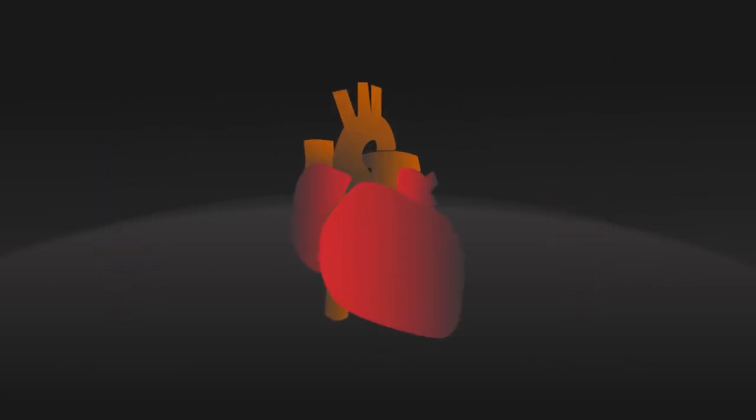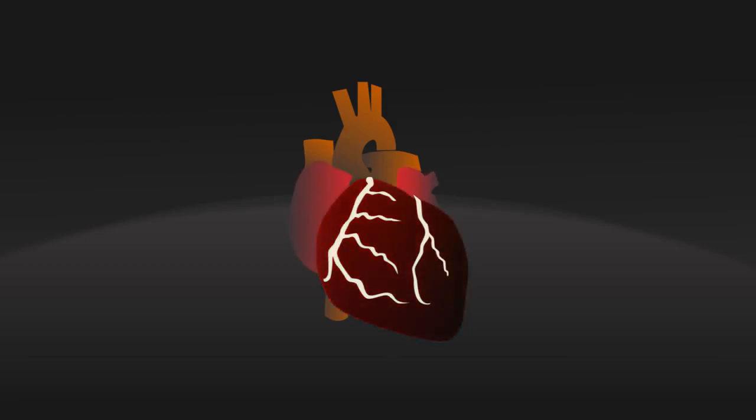Plaque building up in the coronary arteries, so the ones that transport oxygen-rich blood around the heart, can over time cause a blood clot to form, which cuts off some of the heart muscle and causes it to die. This is the most common cause of heart attacks.